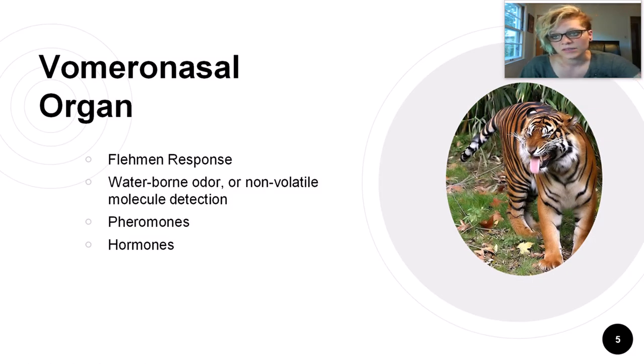So let's talk about the vomeronasal organ. The vomeronasal organ is an organ present in many species, including snakes, cats, deer, cows, horses, dogs, etc. In fact, many vertebrate animals have some form of VNO, including humans. Ours appears to be somewhat vestigial and nonfunctional, but it is there.